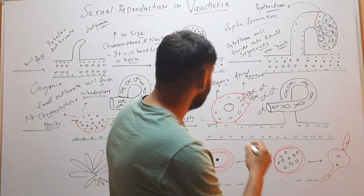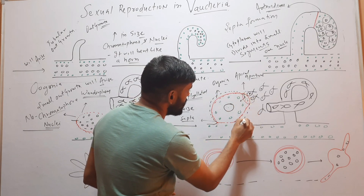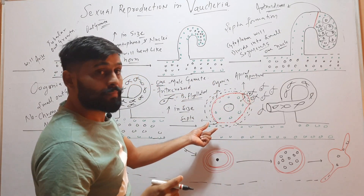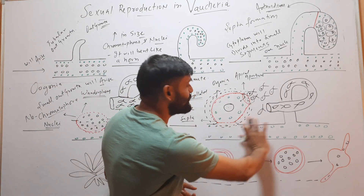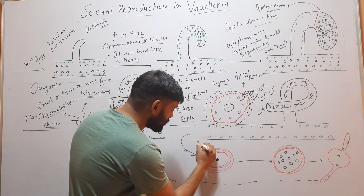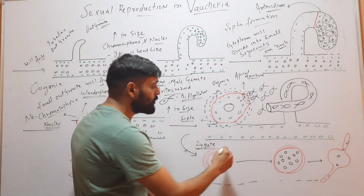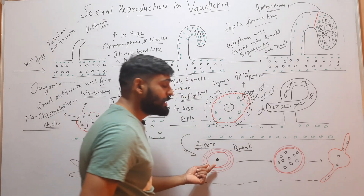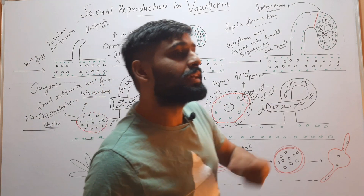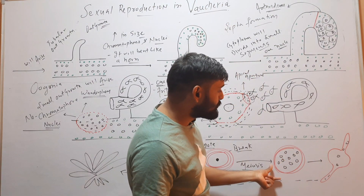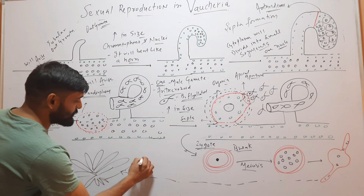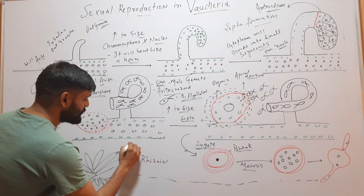On formation of the zygote, it will secrete a thick wall around itself — three to seven layers thick. After some time, the filament will decay and the zygote will be freed from it. On return of favorable conditions, the thick wall will break and there will be meiosis in the diploid nucleus, producing haploid nuclei. These haploid nuclei further divide by mitosis to form many nuclei, and the zygote germinates by protruding two filaments — an upper one and a lower one. One filament forms the rhizoid and another forms the thallus structure.